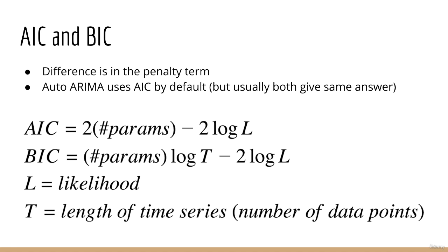For the AIC, the log likelihood is penalized by adding two times the number of parameters in the model. For the BIC, it's penalized by adding the number of parameters in the model times the log of the number of data points. So they both do the same thing, just slightly differently.